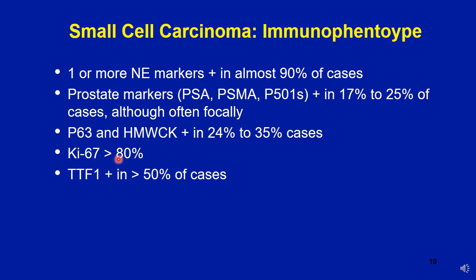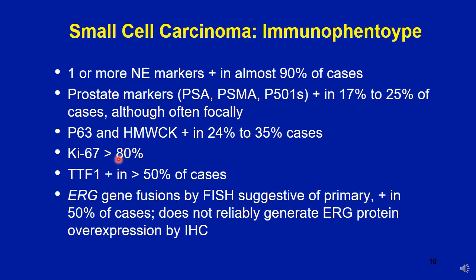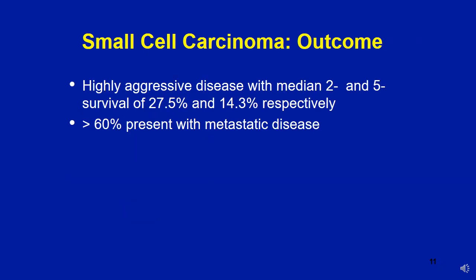TTF1 can be positive in up to 50 percent of cases, so TTF1 expression will not differentiate primary prostate from metastatic lung origin small cell neuroendocrine carcinoma. ERG gene fusion by FISH is very suggestive of primary prostate small cell carcinoma, positive in about 50 percent of cases. An important point: this gene fusion does not reliably generate ERG protein overexpression by immunohistochemistry, so IHC is often unreliable. These are highly aggressive tumors with 2- and 5-year survival of 27.5 percent and 14.3 percent respectively.